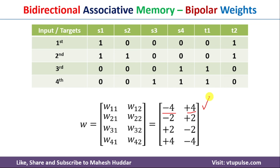In this video, I discussed how to train bidirectional associative memory to get the bipolar weights with a simple numerical example. I hope the concept is clear. If you like the video, do like and share with your friends. Press the subscribe button for more videos, and press the bell icon for regular updates. Thank you for watching.